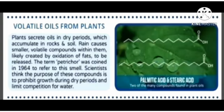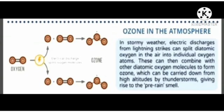Volatile oils from plants. Plants secrete oils in dry periods which accumulate in rocks and soil. Rain causes smaller volatile compounds within them that are created by oxidation of fats to be released. The term petrichor was coined in 1964 to refer to this smell. Scientists think the purpose of these compounds is to prohibit growth during dry periods and limit competition for water.